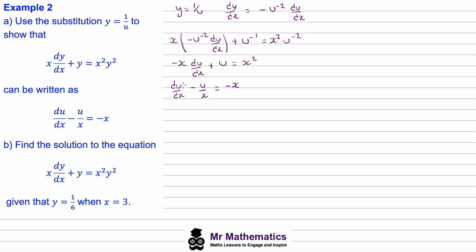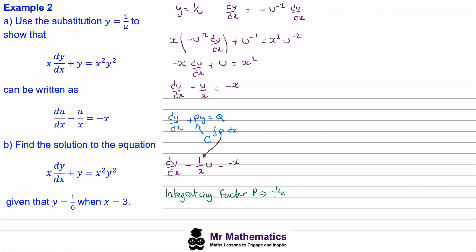Now we need to find the integrating factor. Recall that if dy/dx plus Py equals Q, the integrating factor is e to the integral of P with respect to x. Rewriting our equation as du/dx minus (1/x)u equals negative x, we can identify P as negative 1/x.